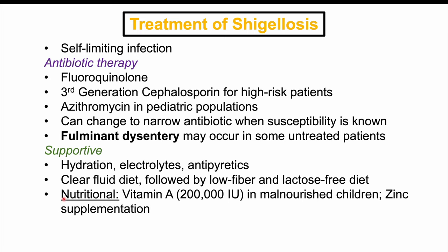Nutritional supplementation is very important in certain patient populations, especially malnourished children. 200,000 units of vitamin A given to malnourished children can help resolve symptoms significantly. Zinc supplementation has also shown reductions in signs and symptoms and overall improvement after the condition resolves.